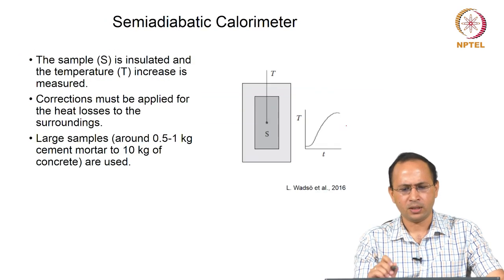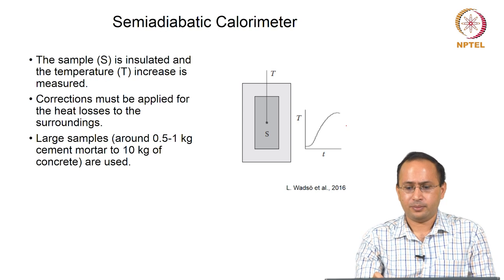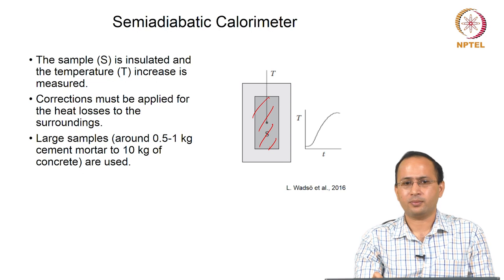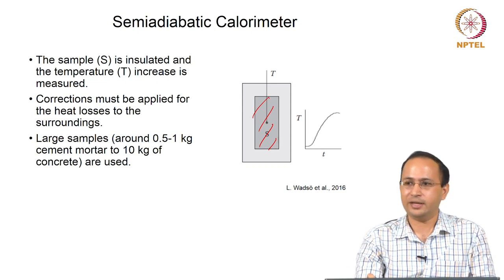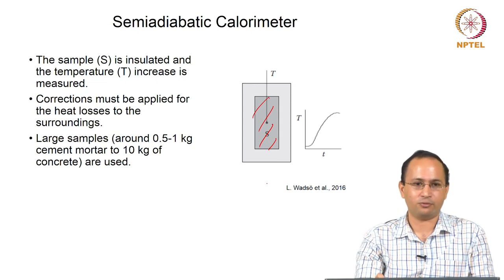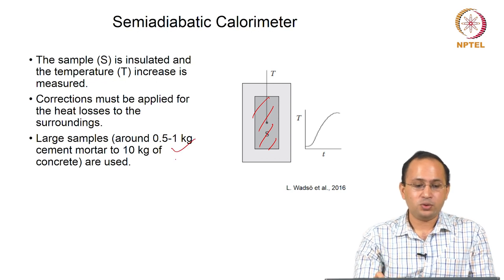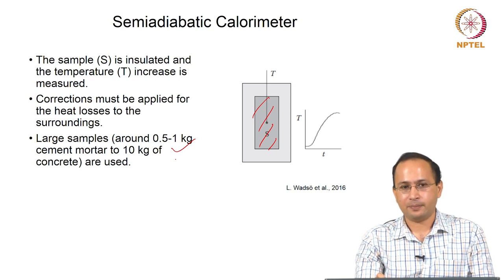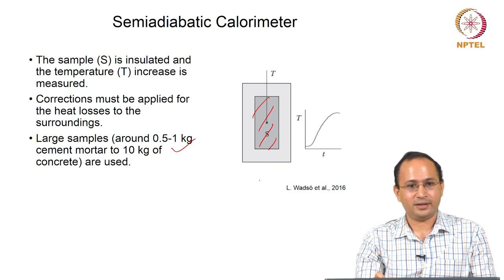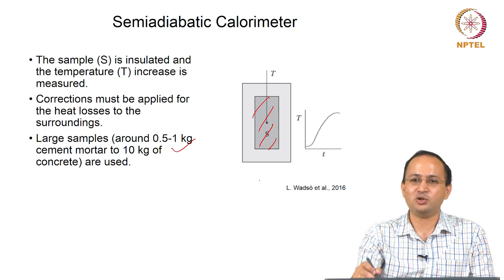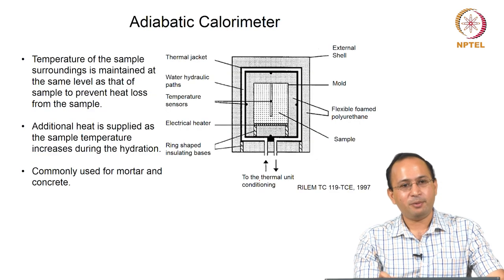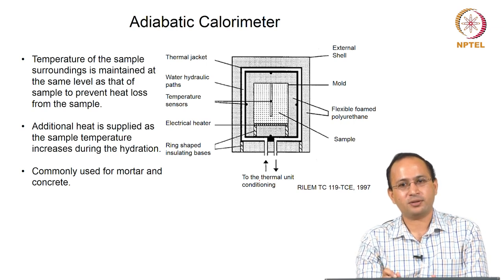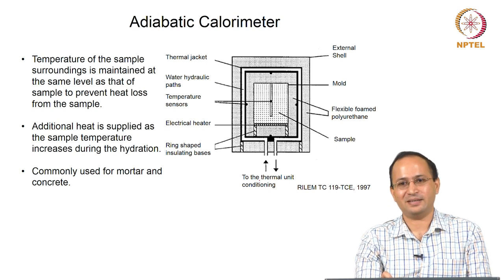In semi-adiabatic calorimetry, you completely insulate the sample to prevent heat loss and measure temperature versus time. To calculate heat of hydration you convert back using heat capacity of the sample. The advantage is you can use it for concrete and mortars — large samples up to 10 kg. However, as temperature increases it influences hydration, because insulation causes temperature to rise, which further influences cement hydration. In adiabatic, you minimize heat loss by maintaining the surrounding temperature close to the sample temperature, for example using a water bath.